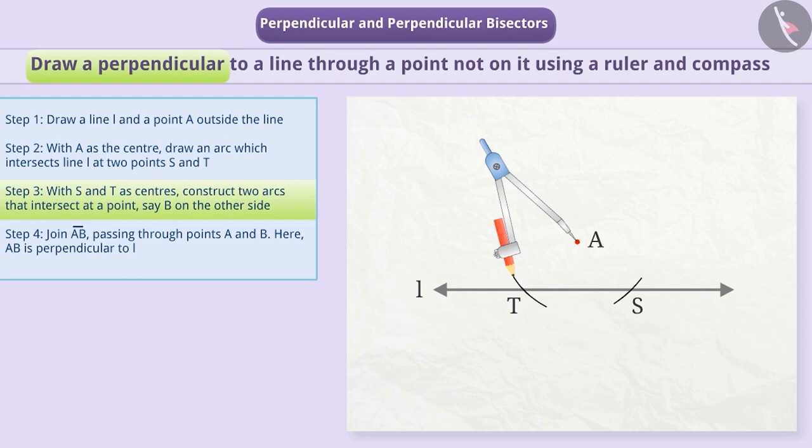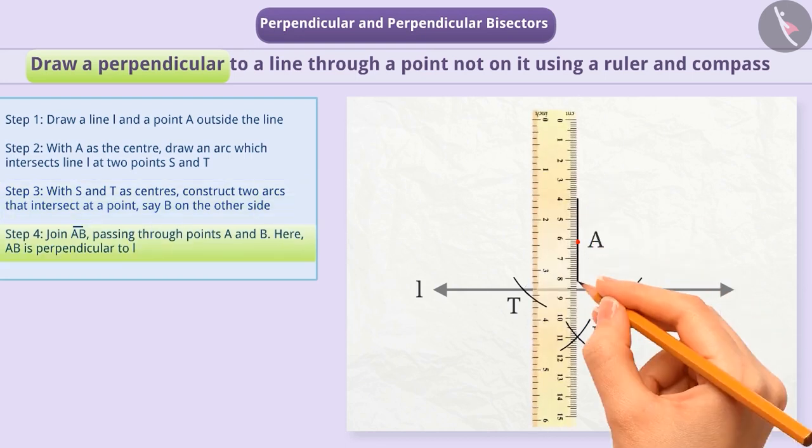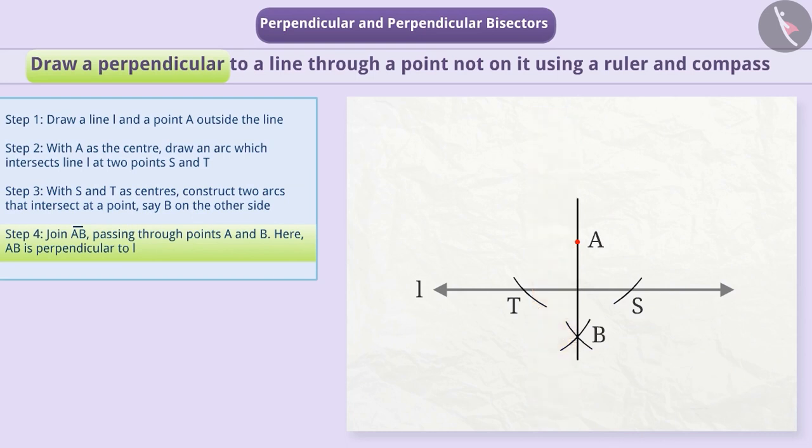Using the same radius and with S and T as centres, construct two arcs that intersect at a point, say B on the other side. Step 4: We will join AB. Thus, AB is perpendicular to L.